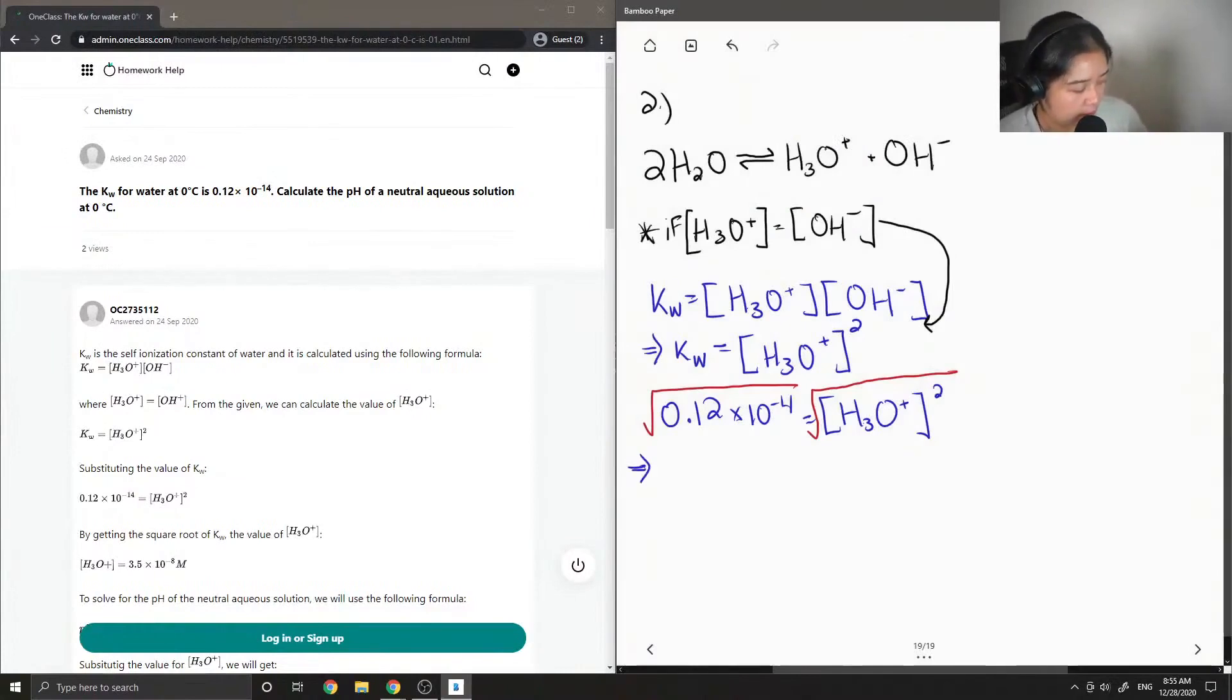So I'll show that here, and you should end up getting 3.5 times 10 to the negative 8 is equal to the concentration of H3O plus.